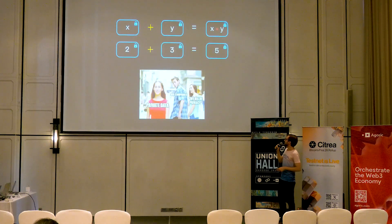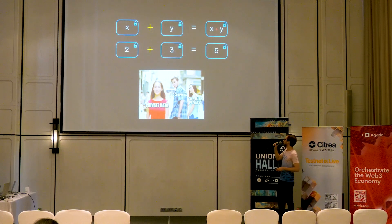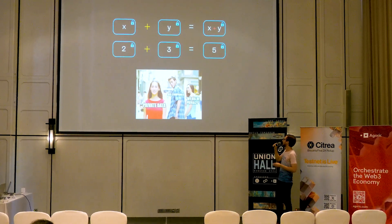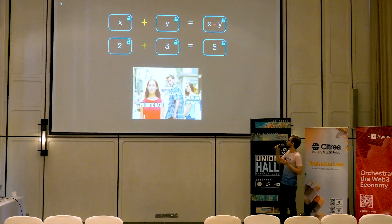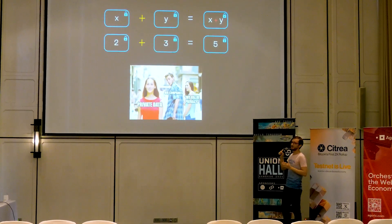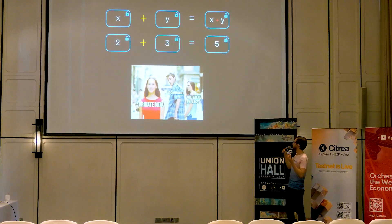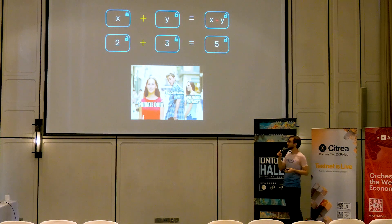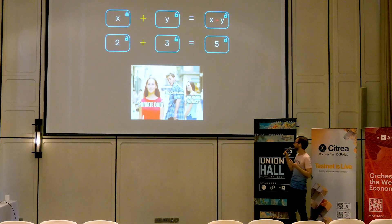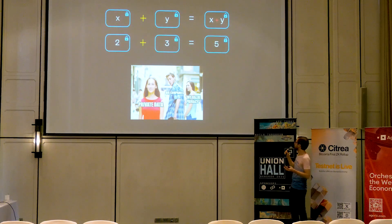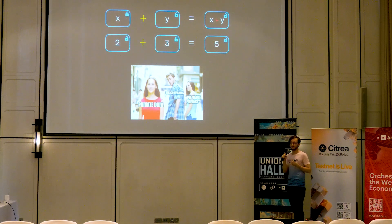This is just an example of how FHE works. In the blue box, you can see there is X and there is Y. When you try to add X and Y together without decrypting them, you get the value of X and Y encrypted. As an example, if you try to add two and three as encrypted data, you get the value of five — and it remains encrypted as well.